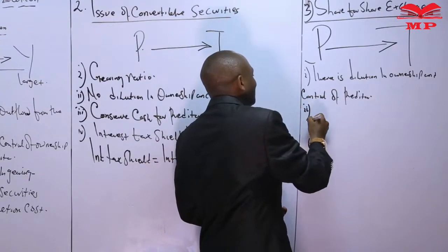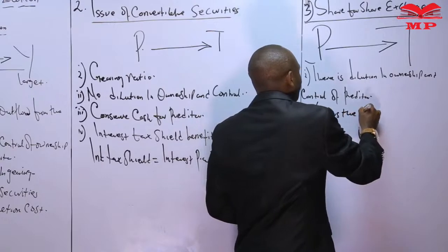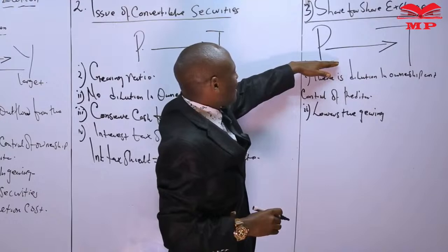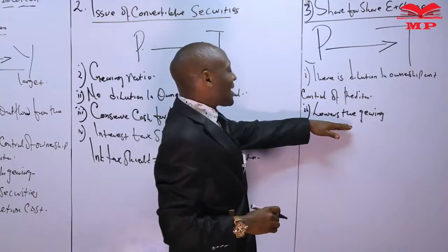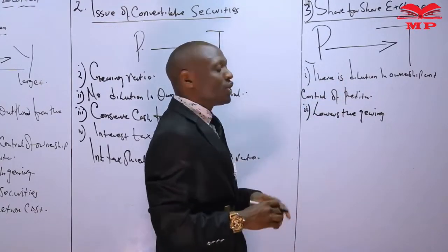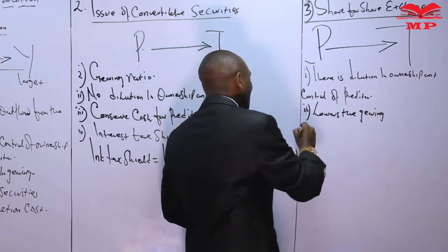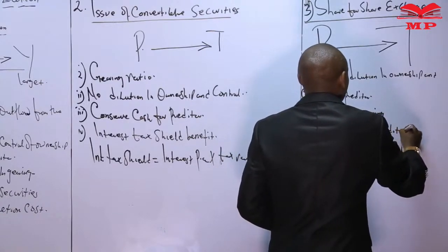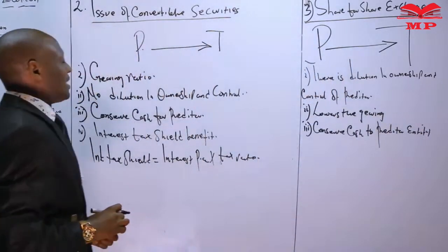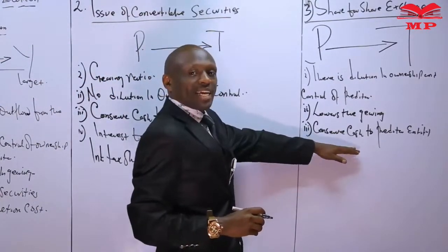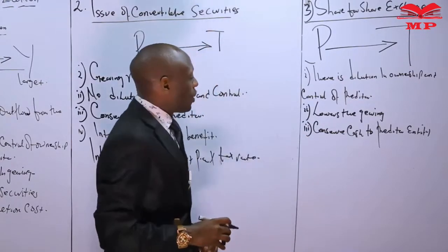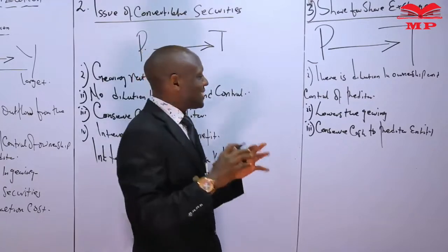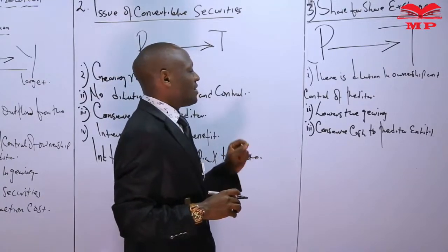Number two, share for share exchange lowers the gearing ratio, because the amount of equity in the predator increases while debt remains constant, thereby reducing financial risk in the predator entity. Number three, it conserves cash for the predator entity, meaning the predator is not likely to suffer liquidity challenges after the merger and acquisition, as cash in the predator is retained.